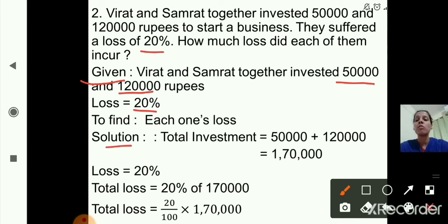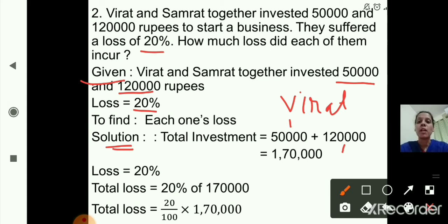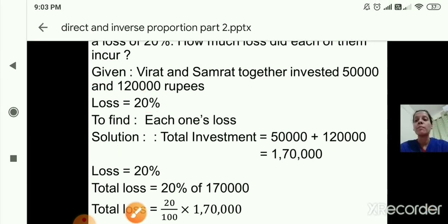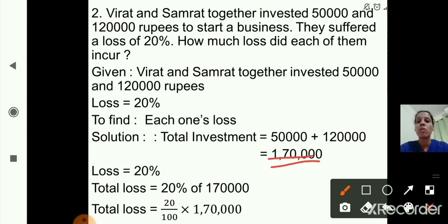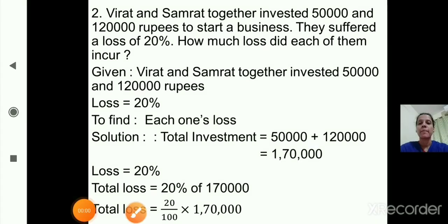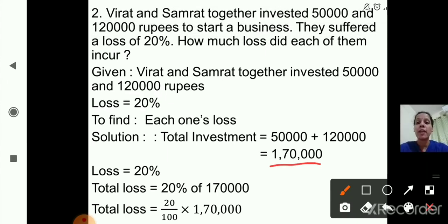In the solution, first we find total investment. Investment by Virat is 50,000 and investment by Samrat is 1,20,000. So total investment equals 50,000 plus 1,20,000, which is 1,70,000. Now loss is 20%, so we will find out total loss.